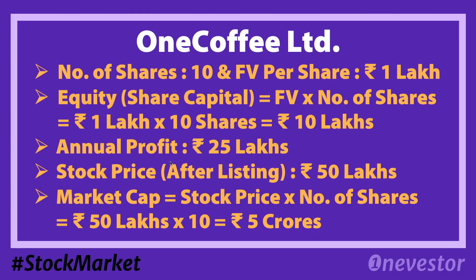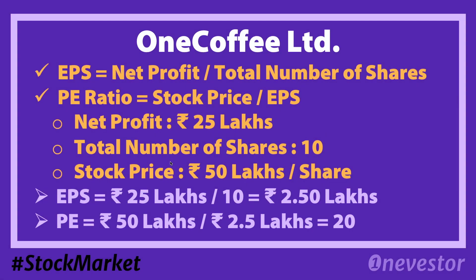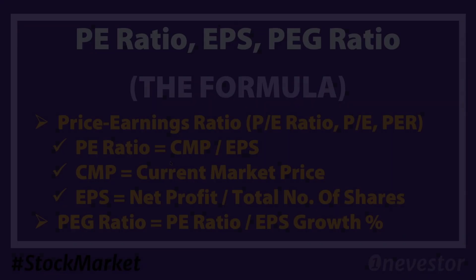Now let's check the financials. The market capitalization and annual profit are noted. The face value is 1 rupee, and the market price is 50 rupees. The price value — that is, the market price divided by earnings per share — gives us the PE ratio. So 50 lakhs divided by 2.5 lakhs gives us 20 times.